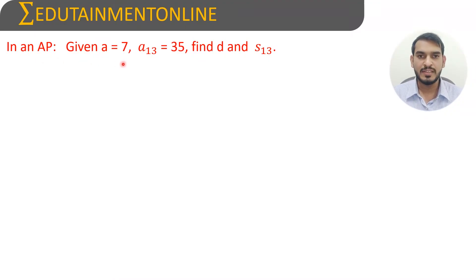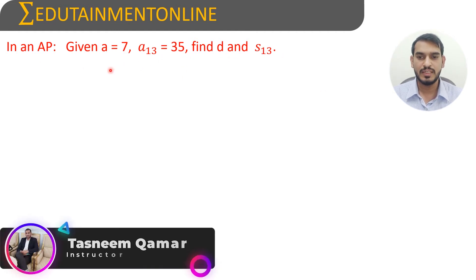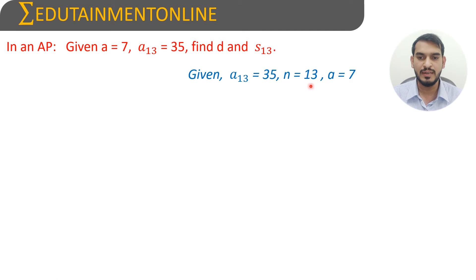In an AP, given a=7, a₁₃=35, find d and s₁₃. Here it is given that a₁₃=35, which means n=13, and a, the first term, equals 7. We need to find the common difference d and s₁₃, the sum of 13 terms.